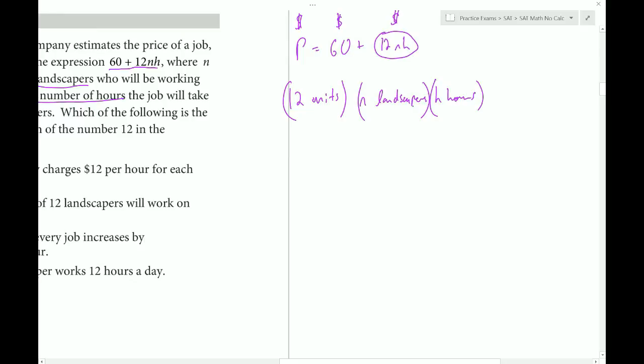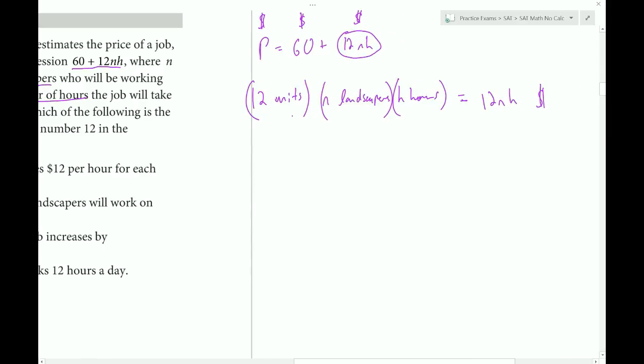When we multiply 12NH, the unit we'd like to get is dollars. We can make an equation: units times landscapers times hours equals dollars.